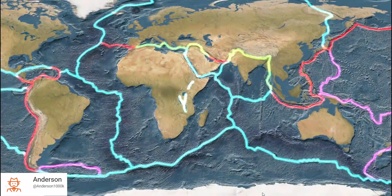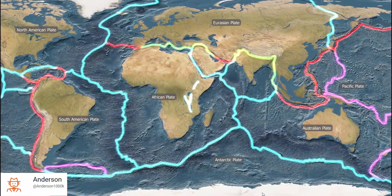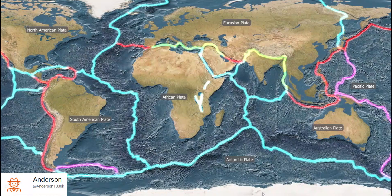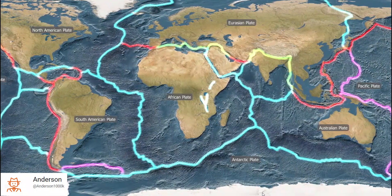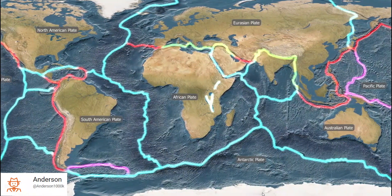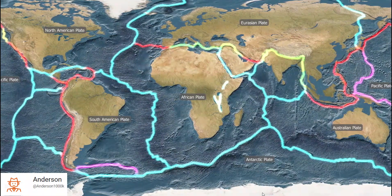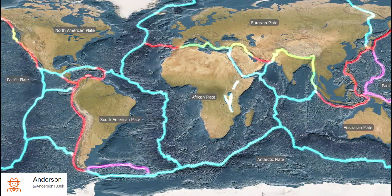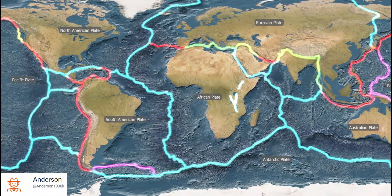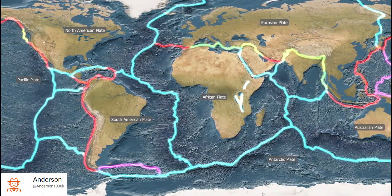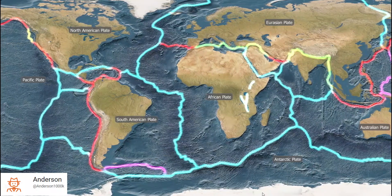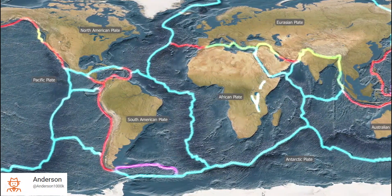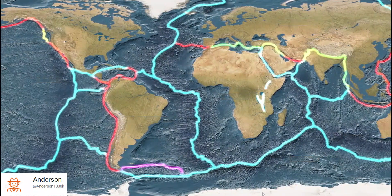The lithosphere is not uniform. It is broken up into tectonic plates of different sizes. Today, we know of seven major tectonic plates and a number of other smaller ones, which all move in relation to each other. The seven major tectonic plates are the African plate, the Eurasian plate, the North American plate, the South American plate, the Pacific plate, the Indo-Australian plate, and the Antarctic plate.